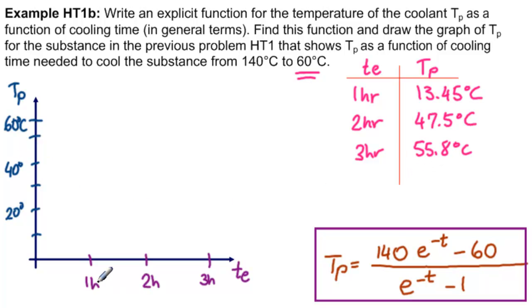And what we need to know is 1 hour is 13 degrees. And 2 hours is 47 degrees. And 3 hours is 55 degrees. Let's get an asymptote up here at 60. There it is.